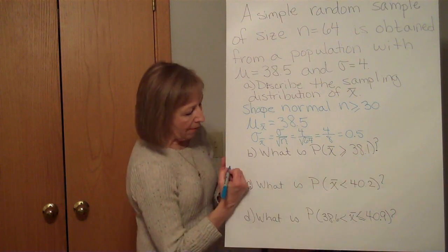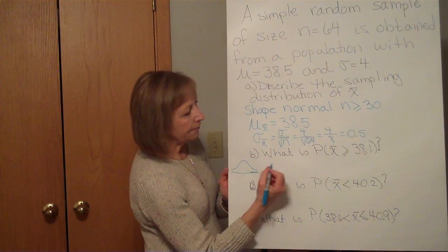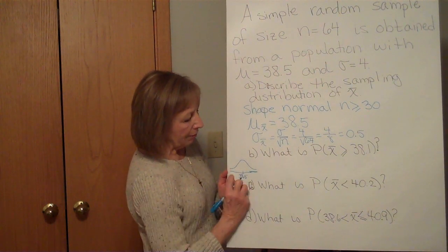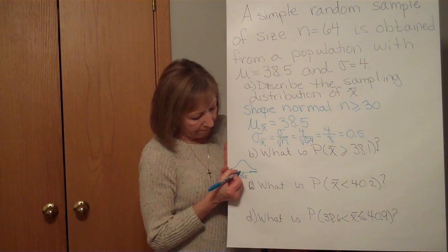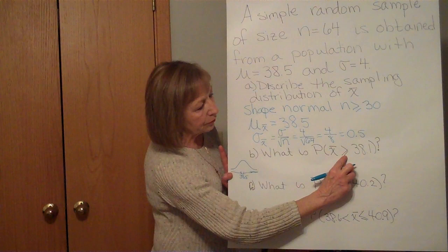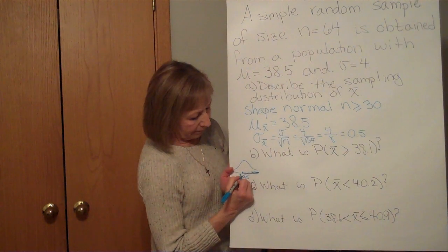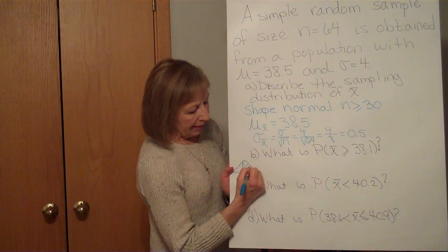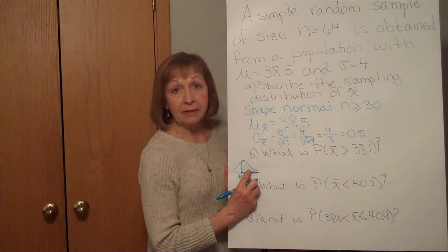So if I think about just the picture here, my normal distribution, the center is at 38.5. Remember this is a number line. 38.1 is just a little bit less than 38.5, so it's to the left of it. But I want that the sample means are greater than or equal to the 38.1, so to the right of that 38.1. So if I draw a vertical line at 38.1 and shade over that span that I wrote on the number line, this is the probability that I'm looking for.